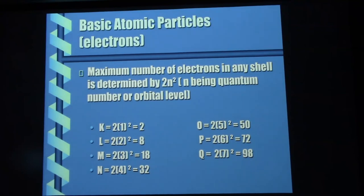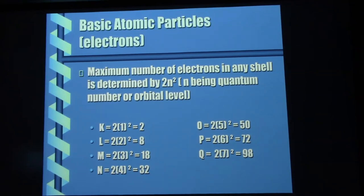Here's a list of the maximum number of electrons in any given shell — just using that formula, plugging in your shell numbers. So it goes: 2, 8, 18, 32, 50, 72, 98. That's a lot of electrons.